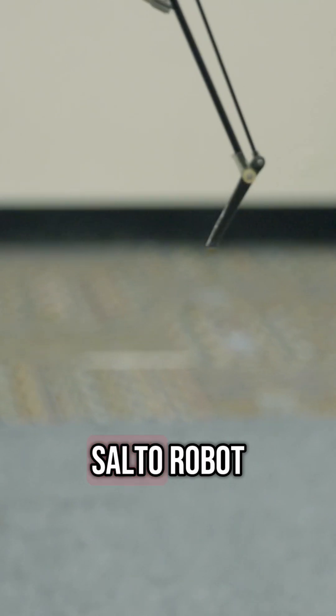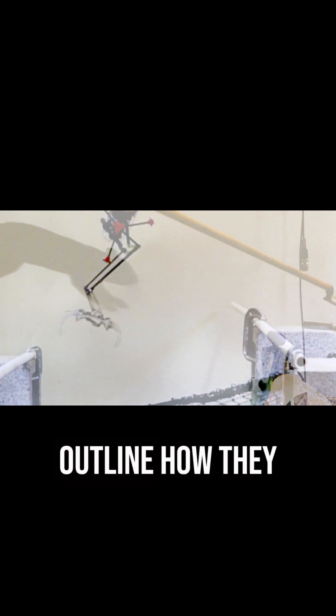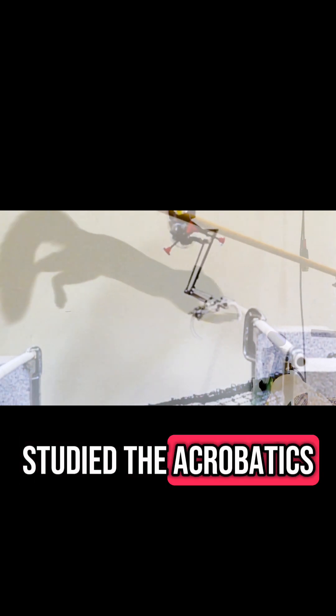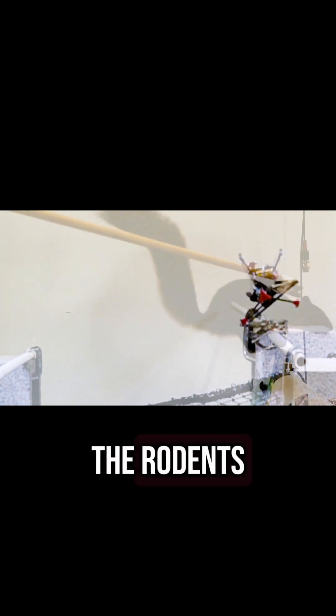This is the Salto robot, a foot-tall jumping dynamo developed at UC Berkeley a decade ago. In two new papers, UC Berkeley researchers outline how they studied the acrobatics of the squirrel and trained Salto to land like the rodents.